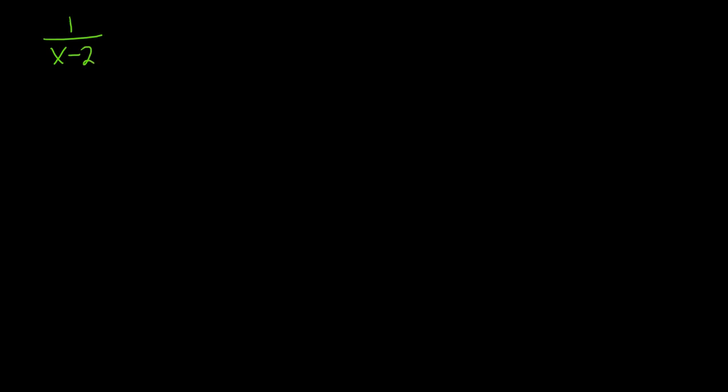Hey everyone, in this video we're going to talk about two different types of discontinuities. A discontinuity is a number where a function is not continuous. For example, if you have 1 over x minus 2, this function is not defined at 2, so x equals 2 is a discontinuity. Because if you plug in 2 on the bottom, you get 1 over 0, so the function is not defined — it's not continuous.